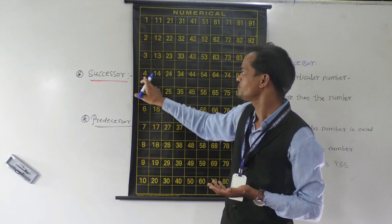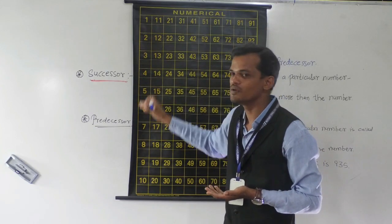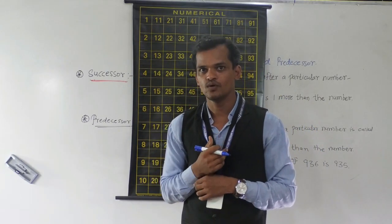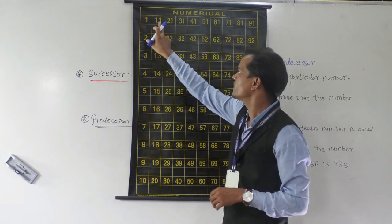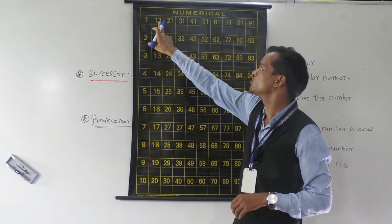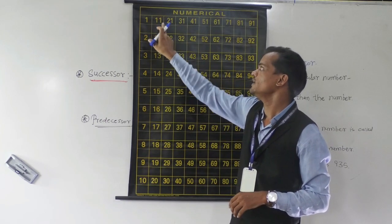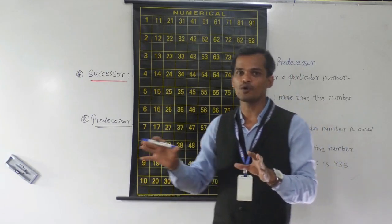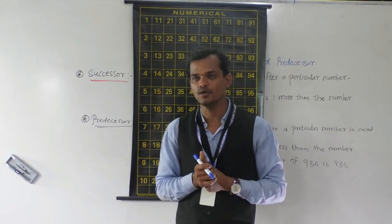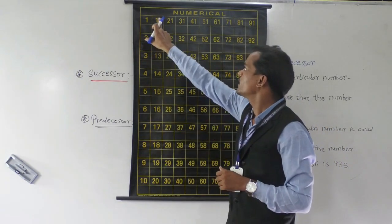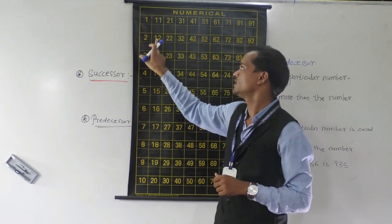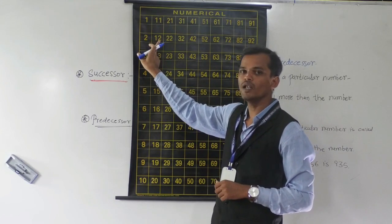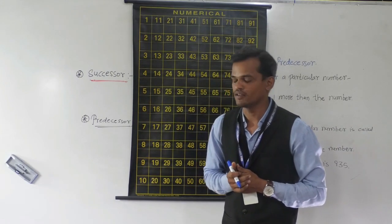So every time this number series is growing up. You can observe here also: 11, 12 — these numbers are properly arranged. So 12 is 1 more than 11.